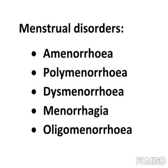Some variation in menstruation is normal, but a woman who regularly goes more than 35 days without menstruating may be diagnosed with oligomenorrhea. For a normal woman with a 28-day cycle, they experience nearly 12 menstrual cycles in a year. If a person has oligomenorrhea, they will experience only 4 to 9 menstrual cycles in a particular year.